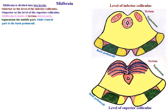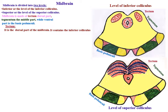Tectum, which is the dorsal part of the midbrain, contains the inferior colliculus in the inferior midbrain and the superior colliculus in the superior midbrain.